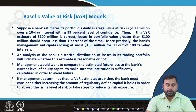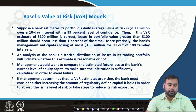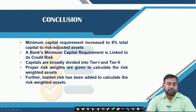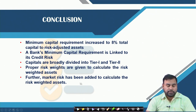Management should always compare estimated future losses to the current level of equity capital to ensure the institution is sufficiently capitalized to avoid failure. If VAR estimates are rising, the bank must either increase regulatory-defined capital to absorb the rising risk or take steps to reduce its risk exposure. In summary: the minimum capital requirement is 8% of total capital to risk-weighted assets, capitals are divided into tier 1 and tier 2, and market risk was added to calculate risk-weighted assets further in 1996.